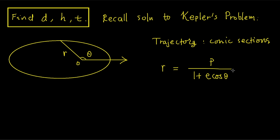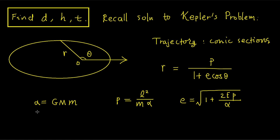p and e are determined by the conserved mechanical quantities during flight. If we write α = GMm — that is, the universal gravitational constant times the planet mass times the projectile mass — then p = L²/(mα), where L is the conserved angular momentum. The eccentricity e is given by the square root of 1 + 2Ep/α, where E is the conserved total energy of the orbit, that is the kinetic energy plus the potential energy.